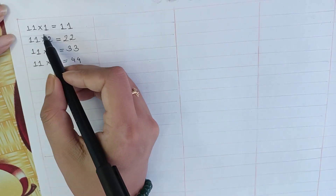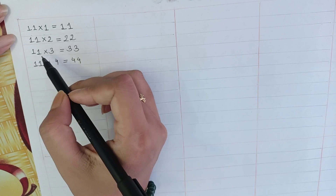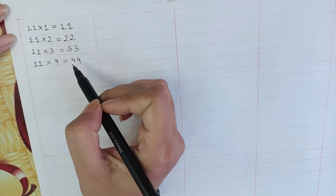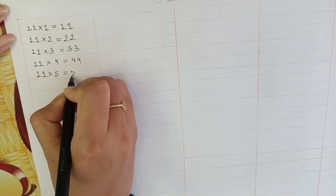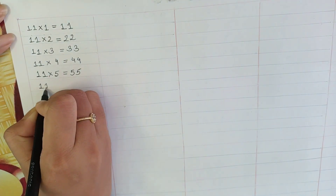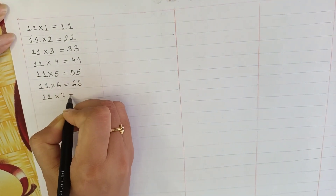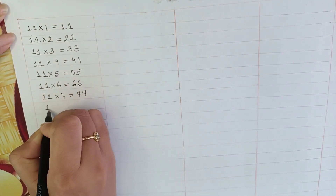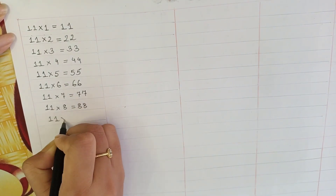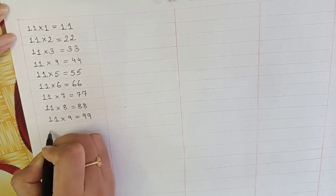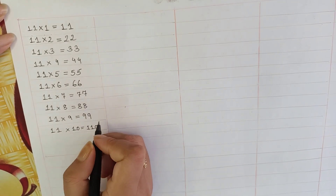First one: 11 into 1 is equal to 11. 11 into 2 is equal to 22. 11 into 3 is equal to 33. 11 into 4 is equal to 44. 11 into 5 is equal to 55. 11 into 6 is equal to 66. 11 into 7 is equal to 77. 11 into 8 is equal to 88. 11 into 9 is equal to 99. 11 into 10 is equal to 110.